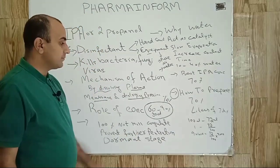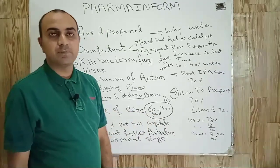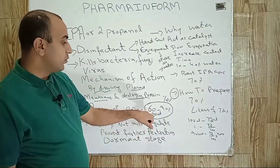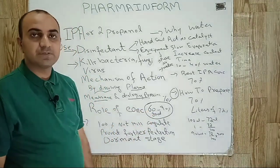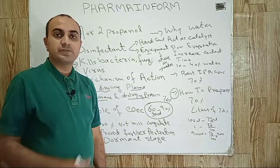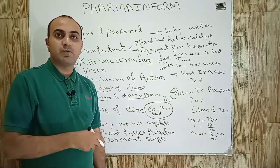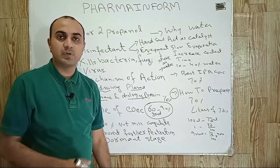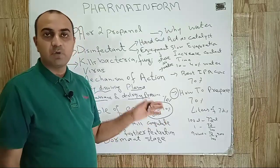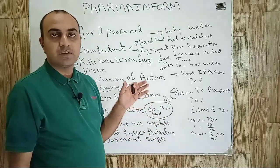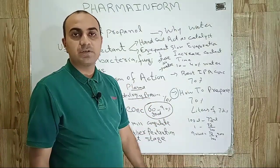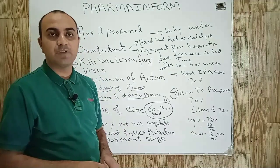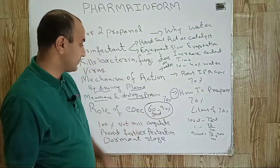This is the main reason why we do not use 100% isopropyl alcohol. Below 60% concentration, IPA also does not perform its action very well, because below 60% the concentration of water is increased and the performance of IPA is reduced.